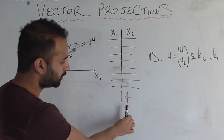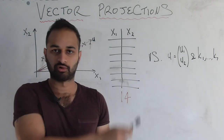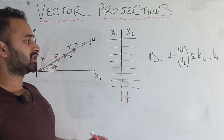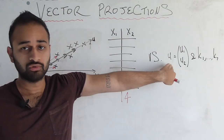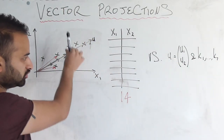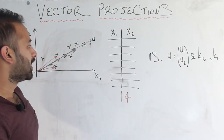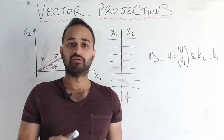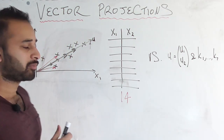Going back to the story: before, we needed 14 distinct numbers to store everything. Now what do we need? We need the unit vector u we're projecting on, given by u1 and u2 — that's two pieces of information. And then the only other pieces of information we need are the scalar multipliers for all the projections.